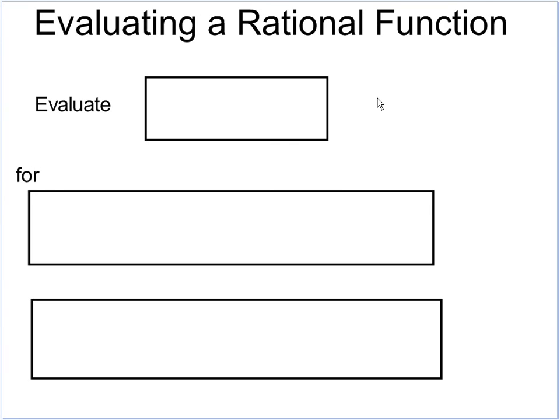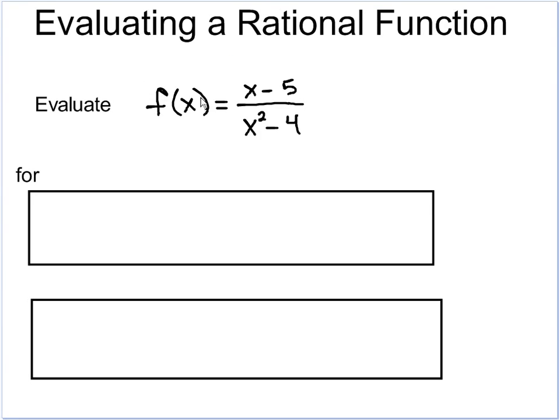Let's look at evaluating rational functions. So, we're going to have to come up with a function. So, here's my function I'm going to evaluate. We have f(x) equals x minus 5 over x squared minus 4. And when you're evaluating, we need to plug in some numbers.